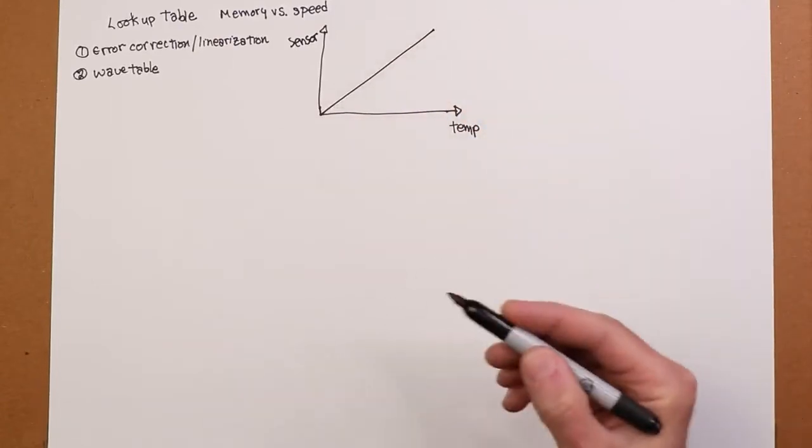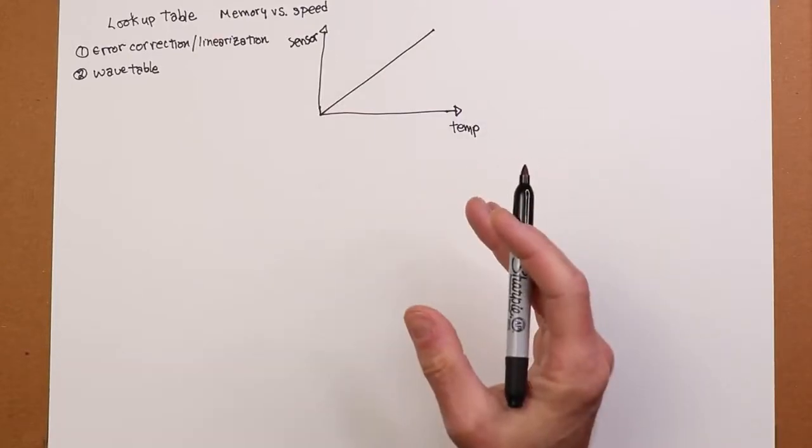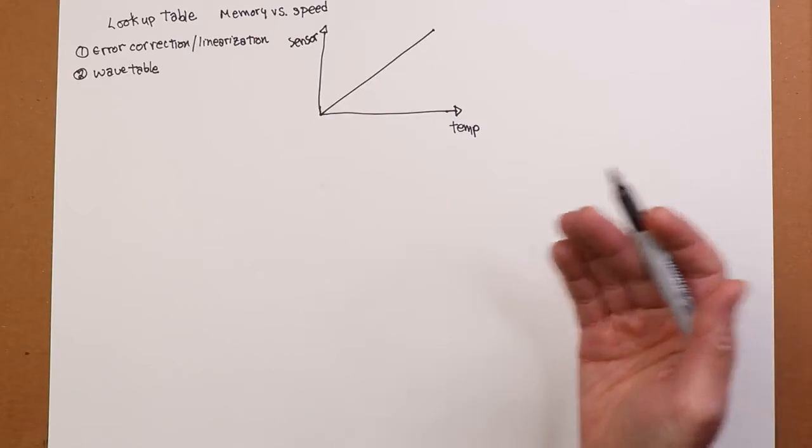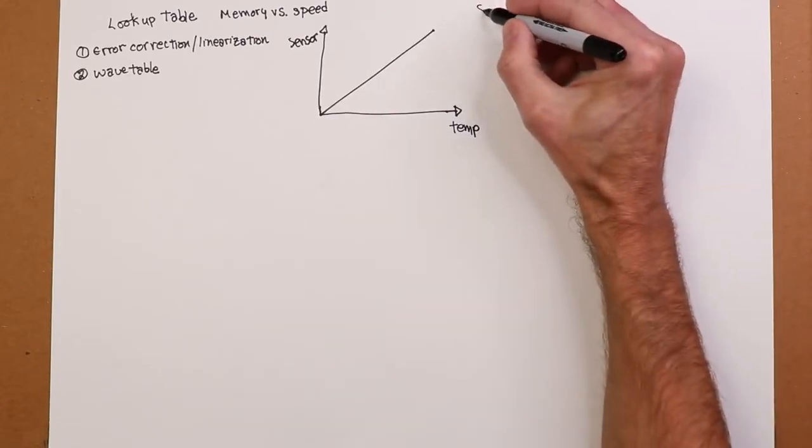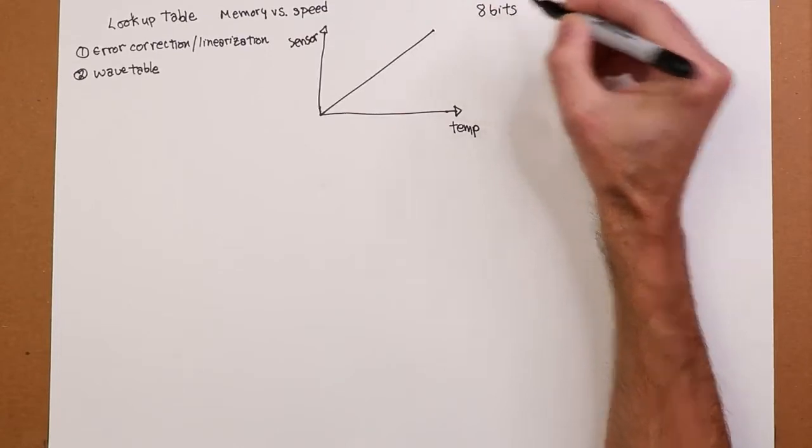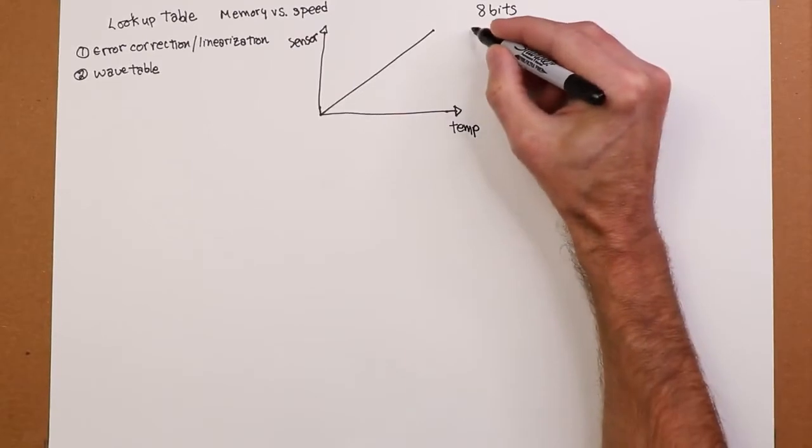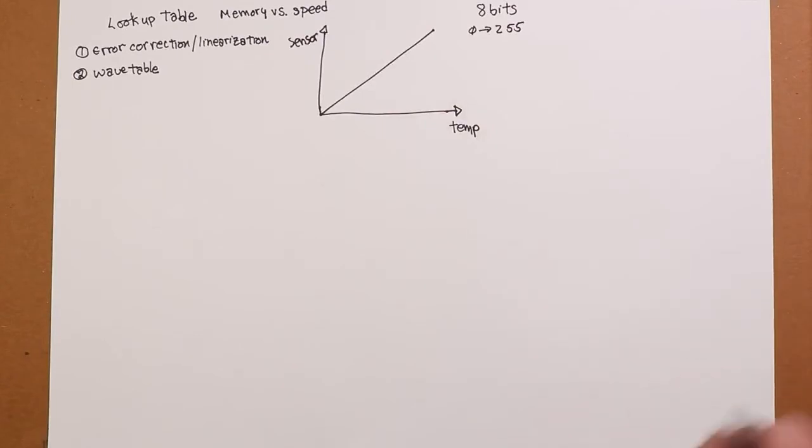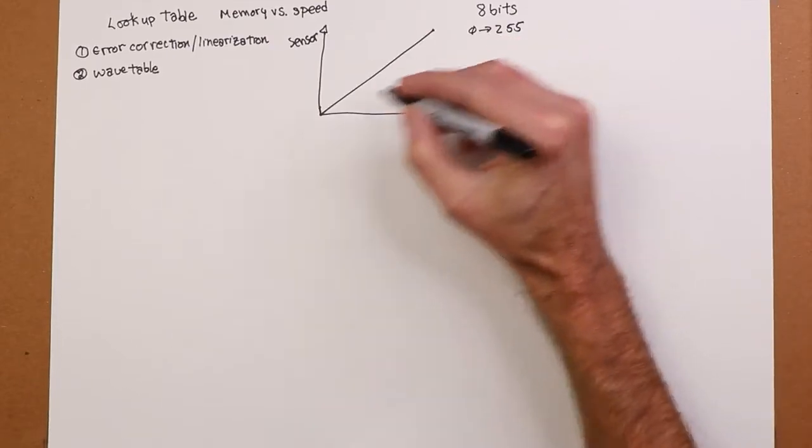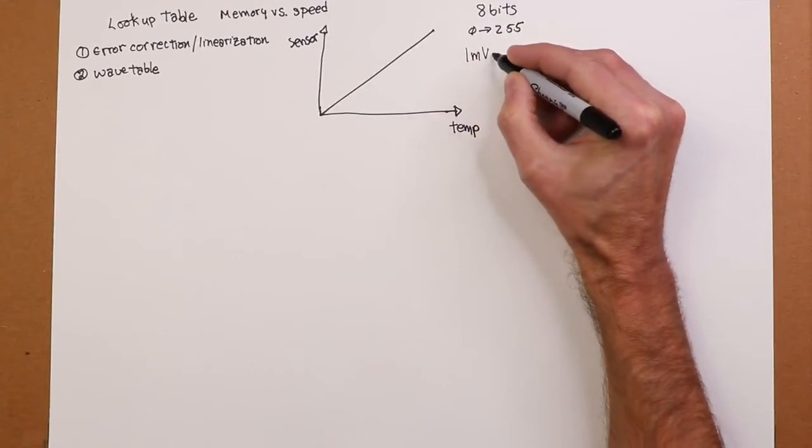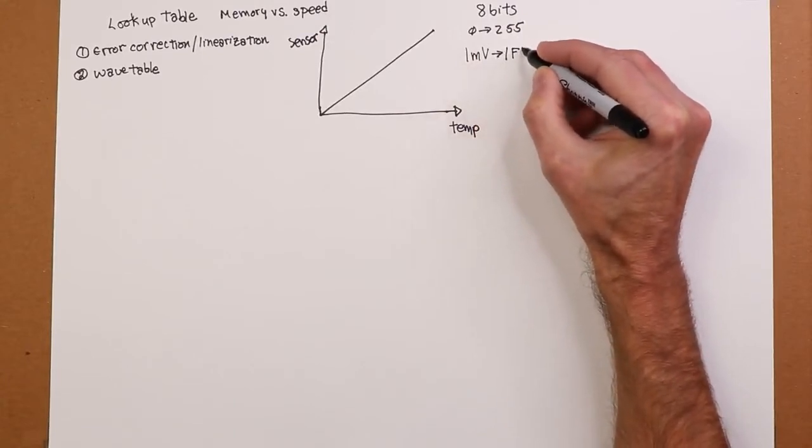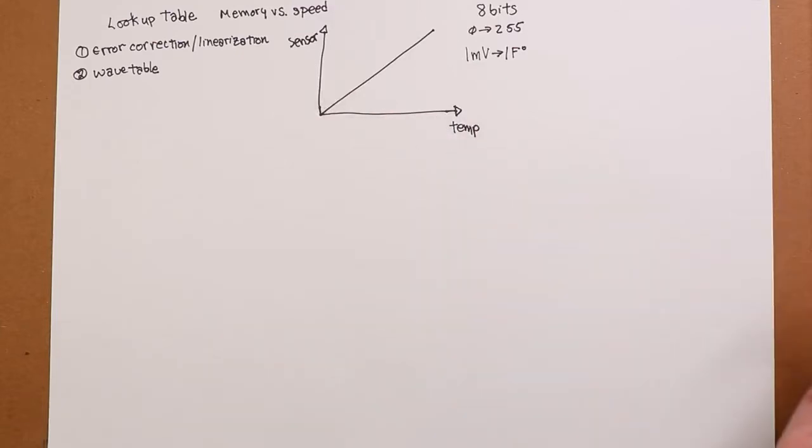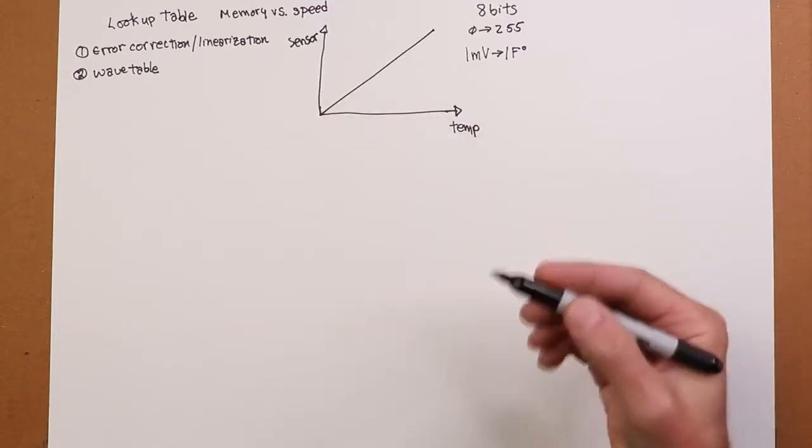Let's say we have a temperature sensor. So here's our temperature, and over here is the output value of the sensor. Now, ideally, we're gonna get a perfect straight line out of this thing. Now just to keep things simple, let's say that we have an 8-bit sensor, an unsigned character, a single byte. So that's going to be values from 0 to 255. So it varies from 0 to 255, a single unsigned character. And just to keep things on the simple side, let's say that one millivolt of temperature change turns into 1 Fahrenheit degree.